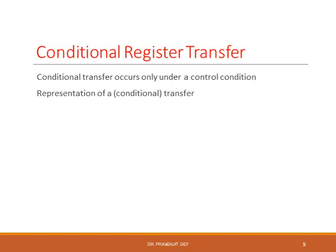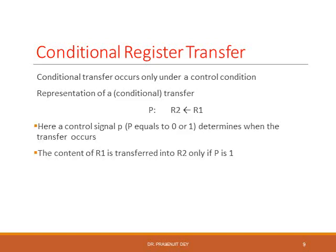Conditional register transfer — when register transfer happens depending upon a certain condition, we call it conditional register transfer. It can be represented as P colon R2 arrow R1. Here, depending on the condition of P, the transfer between R1 and R2 will happen. If P equals 0, there will be no transfer. When P becomes 1, only then will the content of R1 register be transferred to R2 register.